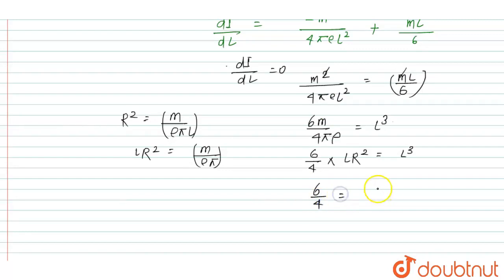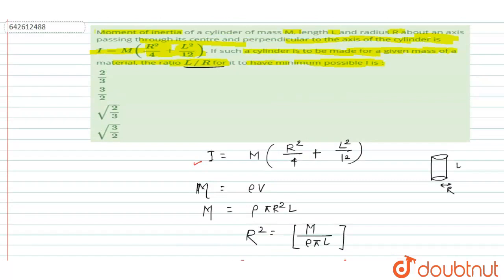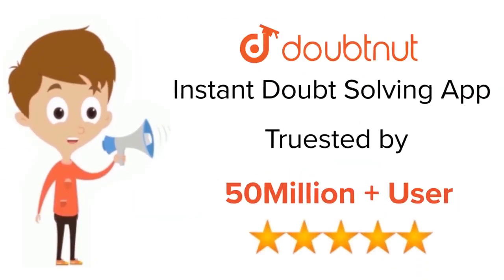From l²/r² = 6/4, we get l/r = √(3/2). This is the required condition for the minimum moment of inertia. Looking at the options, √(3/2) is the right answer — option D. Thank you.